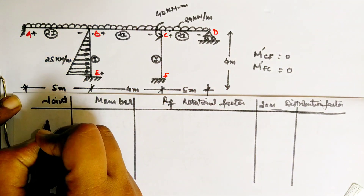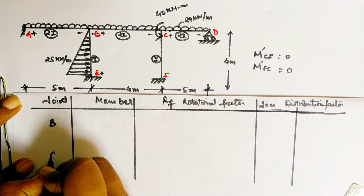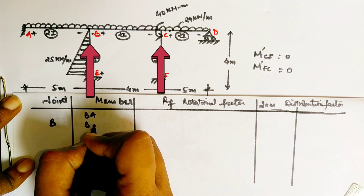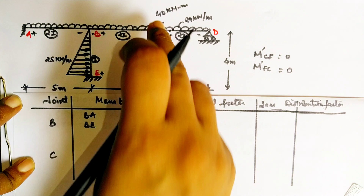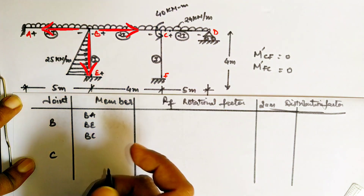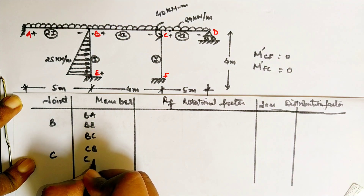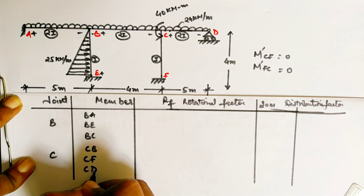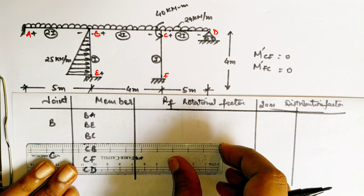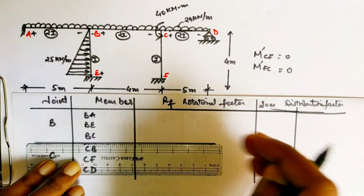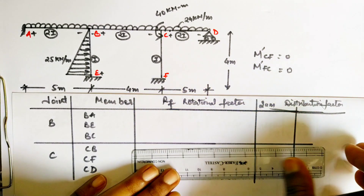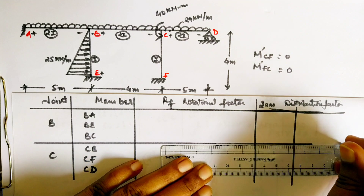Our next step is step two: finding the rotation factor and distribution factor. For that you have to make a table. First, identify the joints having more members joined to them — that is joints B and C, both having three members attached. We write all members attached to B and C. Always take the members in the same order; I am taking them anti-clockwise — BA, BE, then BC — so that chances of mistakes are less.